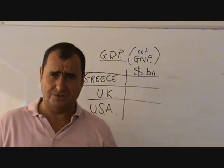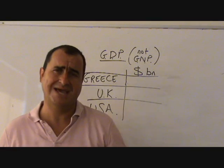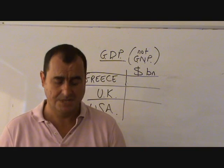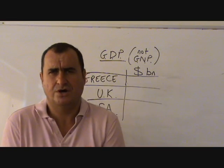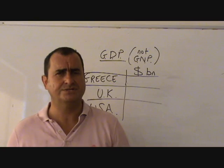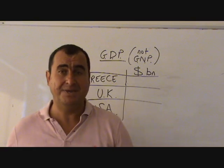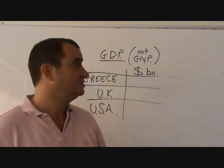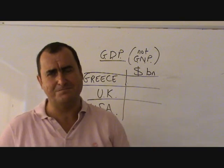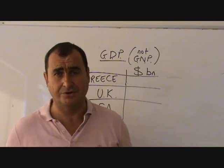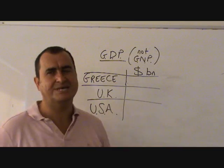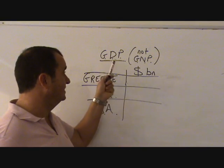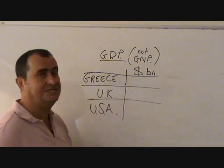GNP, however, is — for the UK — everything produced by UK-owned businesses and workers, wherever they are in the world. The Nissan factory, which is in the UK, is not owned by Britain; it's a Japanese company, and that is not included in GNP figures. BP, producing all over the world — the value of their output is included in GNP. So GNP is the value of all output made by British firms wherever they are on earth, whereas GDP is everything made in Britain. In the case of the UK, GDP is actually a little smaller than GNP.